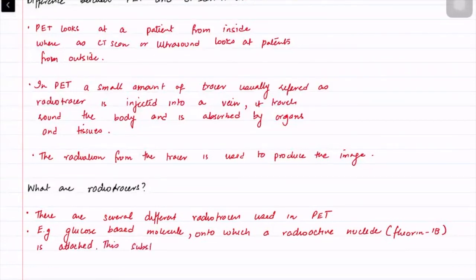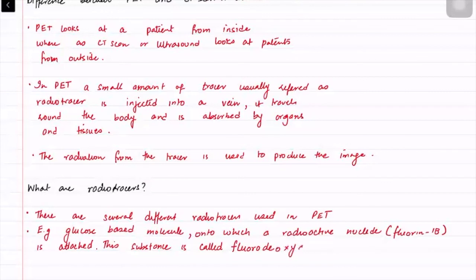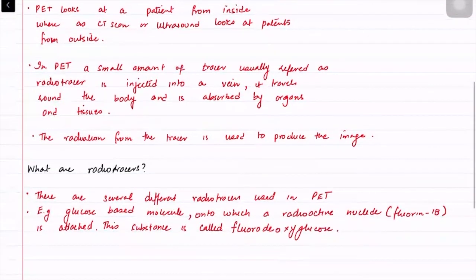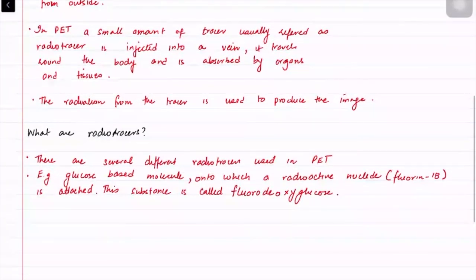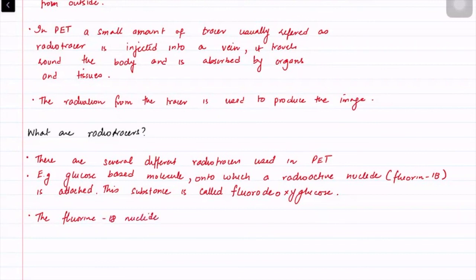This substance is called Fluorodeoxyglucose (FDG). The Fluorine-18 nuclide decays by emitting a beta positive particle.